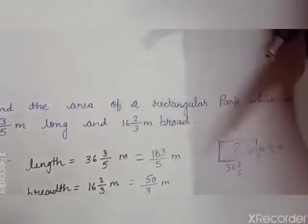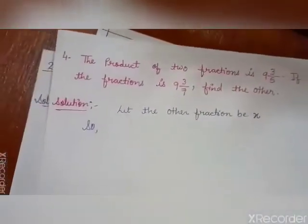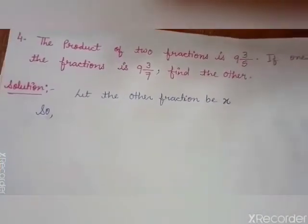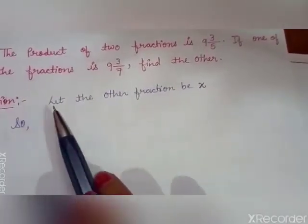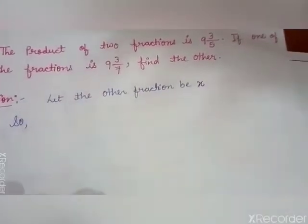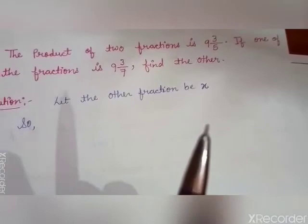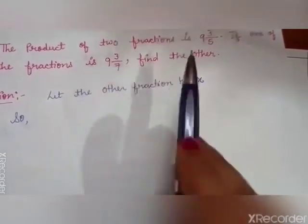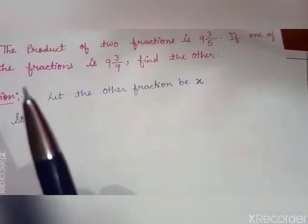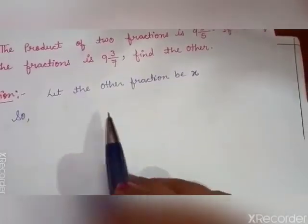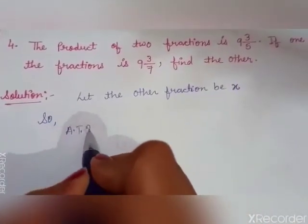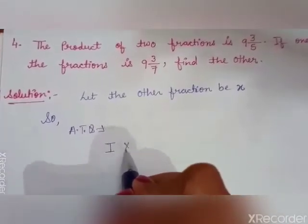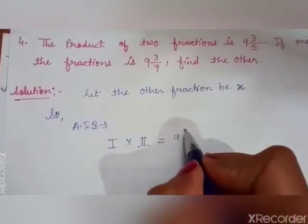Now solve the last sum. The product of two fractions is 9 whole 3 by 5, and one of the fractions is 9 whole 3 by 7 — find the other. You have two numbers; the product of both numbers equals 9 whole 3 by 5, which is 48 by 5. Let the other fraction be x.